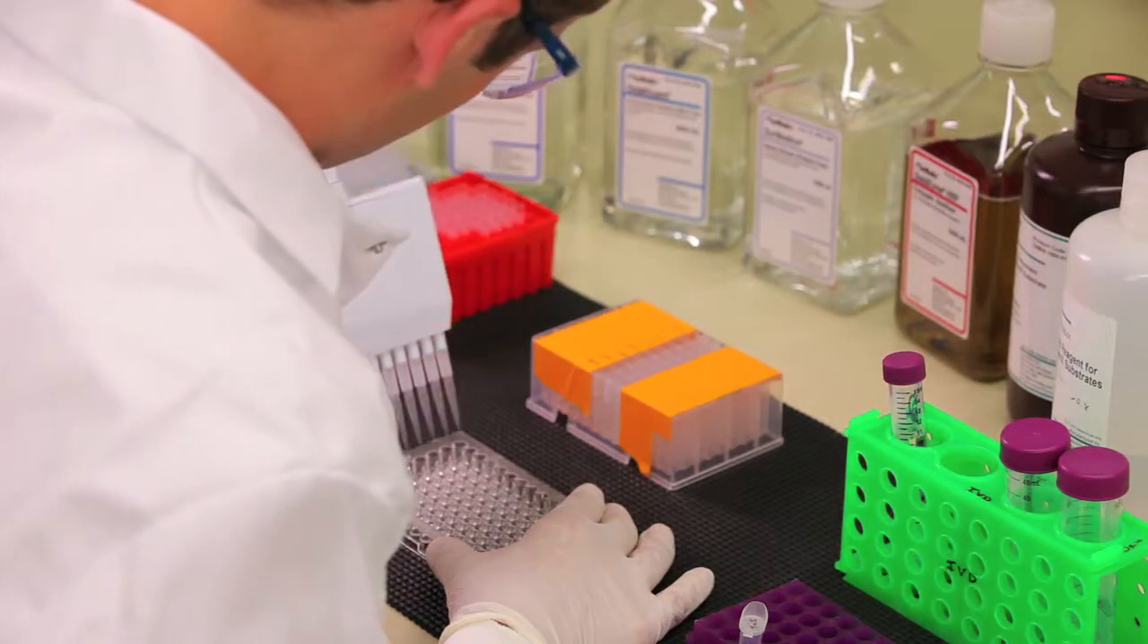Serially dilute your standard material using Surmodics Assay Diluent, which can be easily incorporated into any assay format. Using Surmodics Assay Diluent will help reduce nonspecific binding, as well as matrix interferences and should be used for both the standard curve and samples.